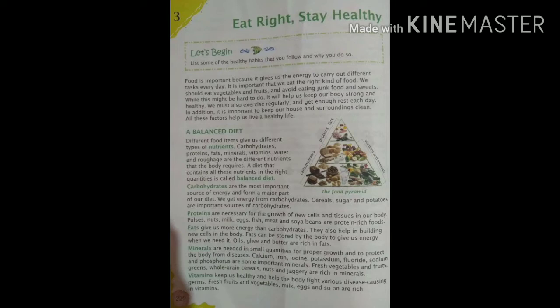Carbohydrates are the most important source of energy and form a major part of our diet. We get energy from carbohydrates. Cereals, sugar and potatoes are important sources of carbohydrates. Proteins are necessary for the growth of new cells and tissues in our body.